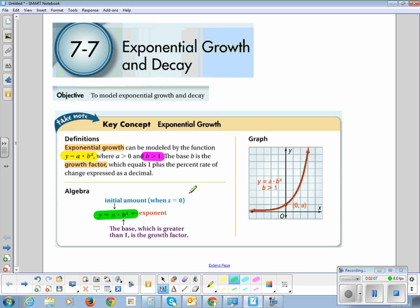The base is the growth factor, so make sure you highlight the growth factor. It's how quickly you're growing by, and exponent is the little guy. Little guy is the exponent. He's got the baby.